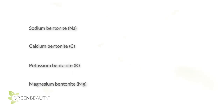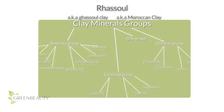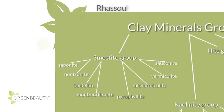Bentonite is mined from deep rock deposits that are thousands of years old. The mineral content varies based on where it's mined, so bentonite that contains mostly sodium is called sodium bentonite, and bentonite clay that contains mostly calcium is called calcium bentonite. In the Western world, the most popular types are sodium bentonite and calcium bentonite.